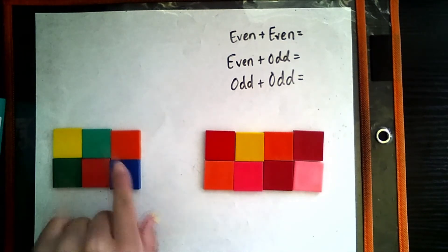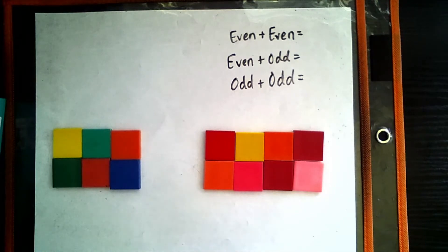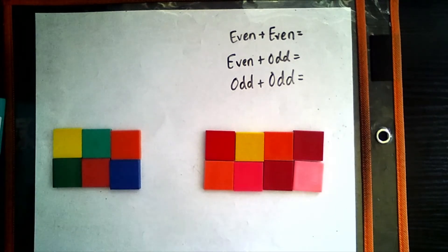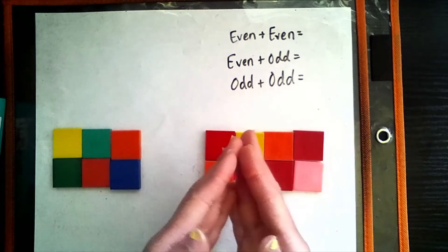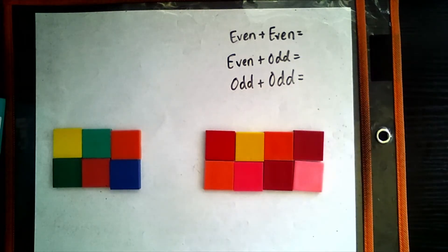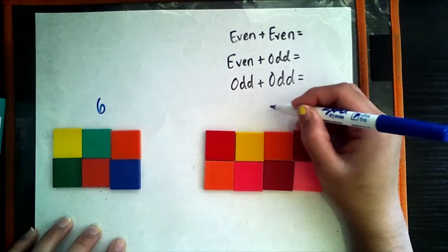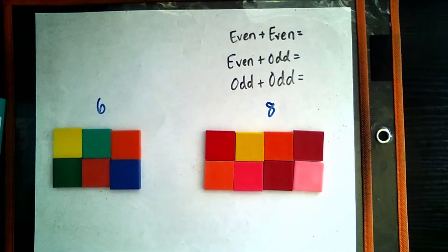Let's see what happens when we add two even numbers together. I know that these numbers are individually even. So I know six is even because each partner, each friend has a partner. And we have the same amount in each row. Same for this array here. We have the same amount in each row or each group. And each friend has a partner. Now, how many tiles do we have all together? If we combine this array and this array, if we put them together, what is the total or whole amount of tiles that we have? Wonderful. It would be 14. So we have six here and eight here. If we combine them together, we would have 14 tiles.